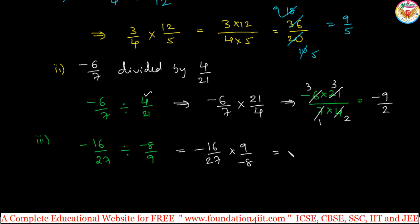Now minus into minus is plus. We can cancel here. 9, 1s are 9, 3s are, and 8, 1s are 8, 2s are. So finally, 2 by 3, and minus into minus is plus, already we know.